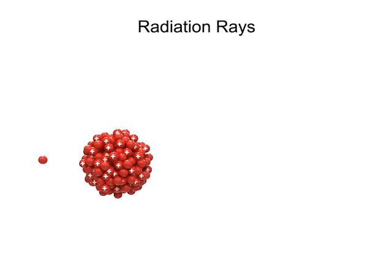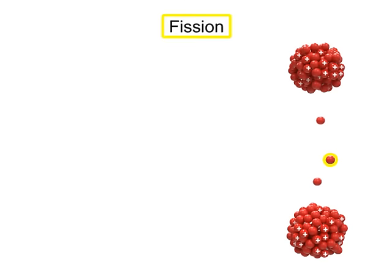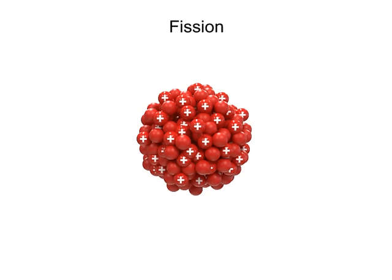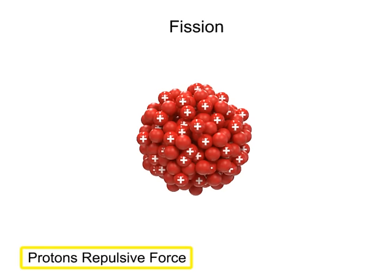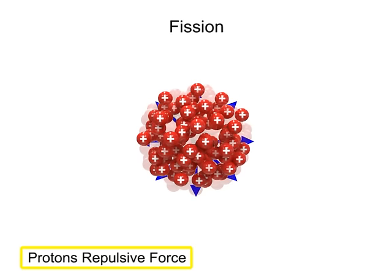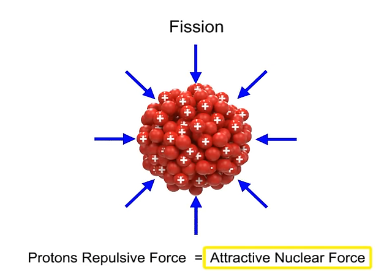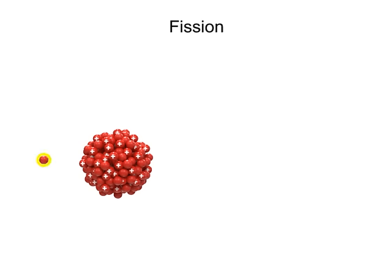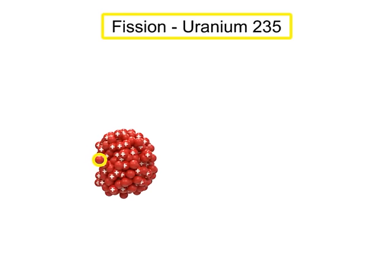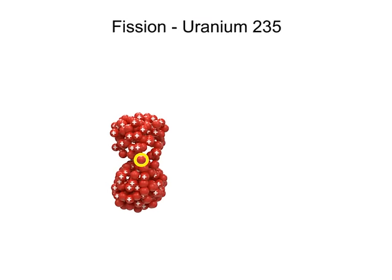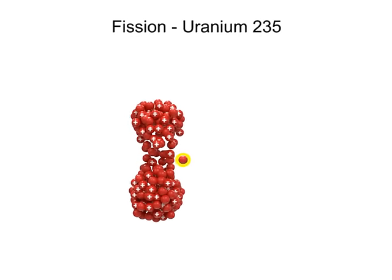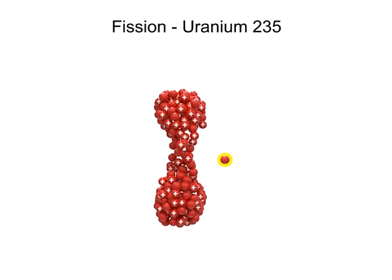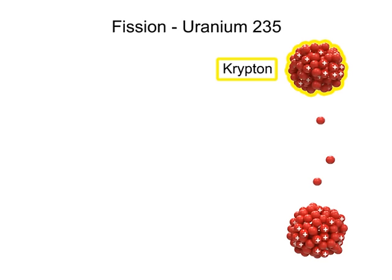When a neutron is fired at high speed into an atom of uranium, it will split the atom in a process called fission. The stability of the nucleus of an atom is maintained by the balance between the repulsive electrical force among protons and the attractive nuclear forces holding the nucleus together. With uranium, this balance is unstable. Thus, when a fast-moving neutron collides with the nucleus of uranium-235, it is stretched into an elongated shape. This elongated shape tips the balance in favor of the repulsive forces and the uranium-235 atom splits into fragments of krypton and barium.